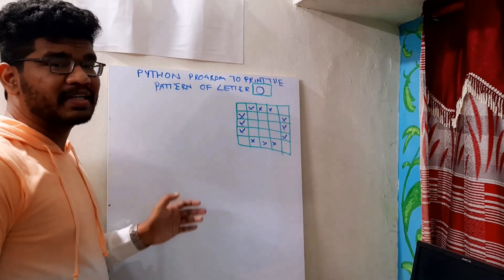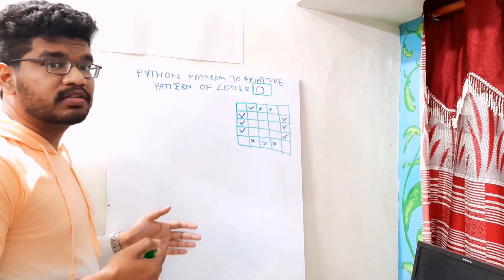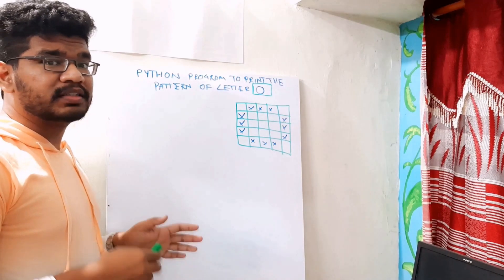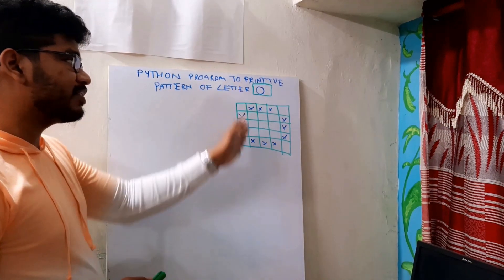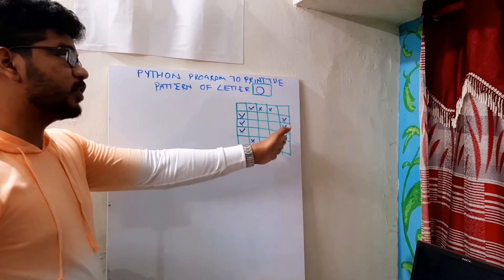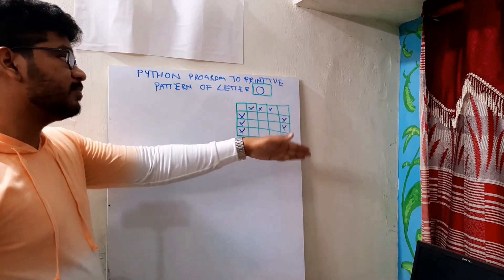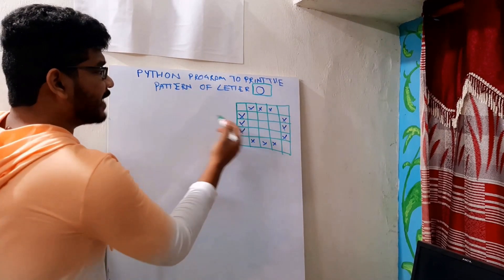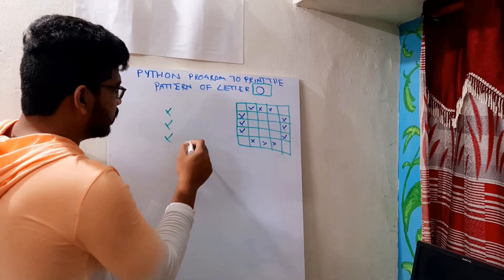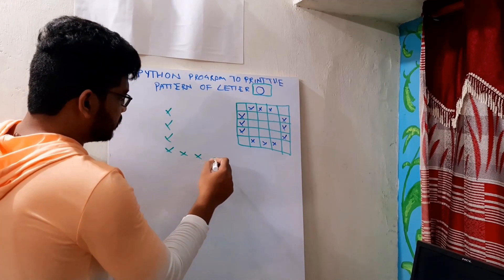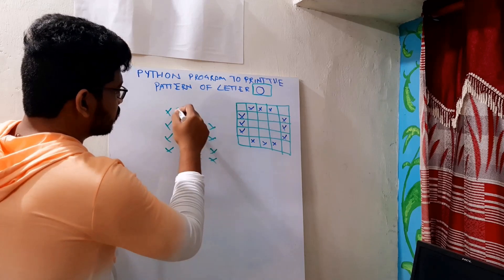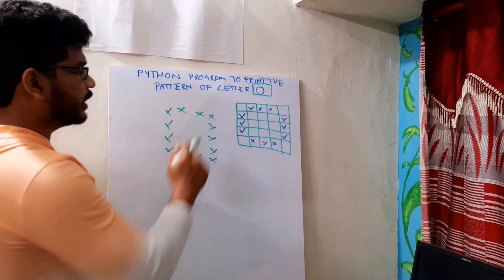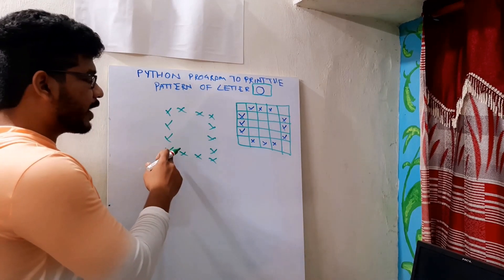Like all the previous patterns, we need to check for some conditions — where we can print stars and where we can print spaces. We can print stars in four conditions: first row, last row, first column, and last column. So if we directly print stars in all the rows and columns, it will look like a square or a box — it won't look like an O.